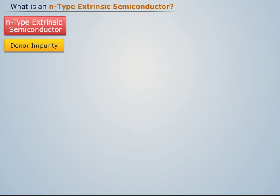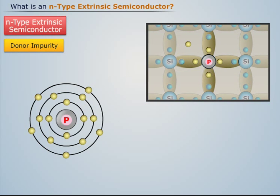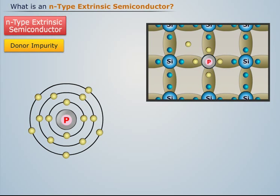Now, when a small amount of pentavalent or donor impurity is added to a pure or intrinsic semiconductor, the resulting semiconductor is called the N-type extrinsic semiconductor.